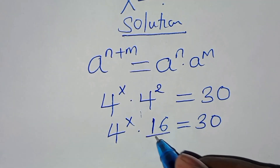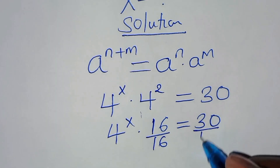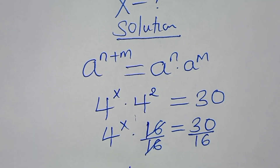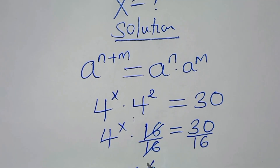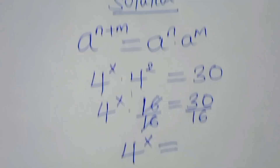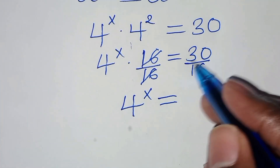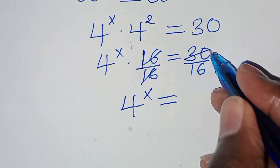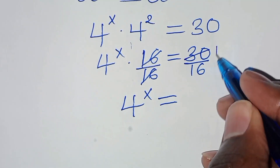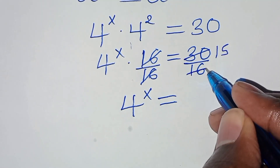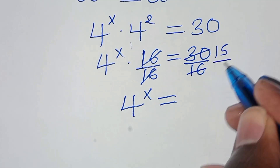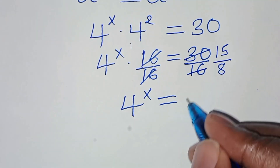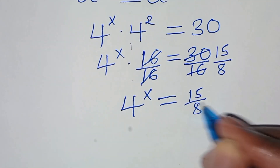So let's divide both sides by 16. Now here we have 4 to the power x is equal to — simplifying by 2, we get 30 divided by 2 is 15, and 16 divided by 2 is 8. So here we have 4 to the power x equals 15 over 8.